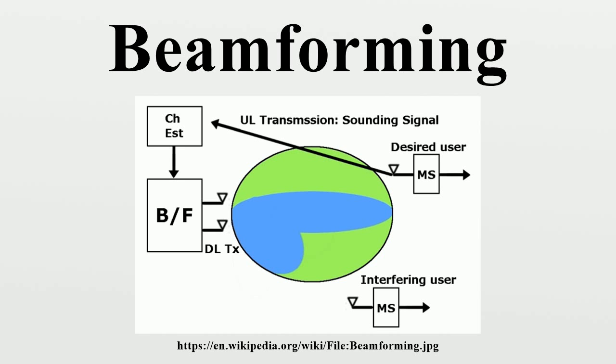Beamforming can be used for radio or sound waves. It has found numerous applications in radar, sonar, seismology, wireless communications, radio astronomy, acoustics, and biomedicine. Adaptive beamforming is used to detect and estimate the signal of interest at the output of a sensor array by means of optimal spatial filtering in interference rejection.